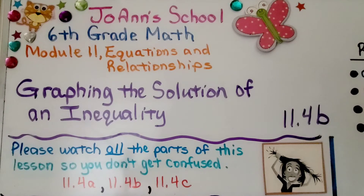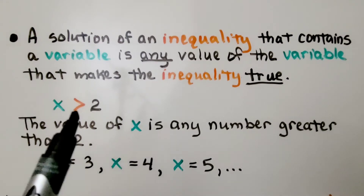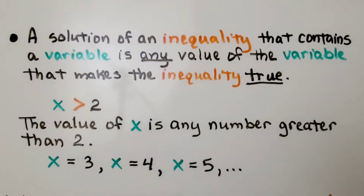Lesson 11.4b: Graphing the Solution of an Inequality. A solution of an inequality that contains a variable is any value of the variable that makes the inequality true. If we have x is greater than 2, the value of x is any number greater than 2. It could be 3, it could be 4, it could be 5, and so on.